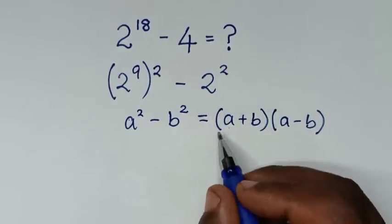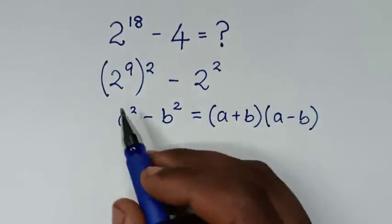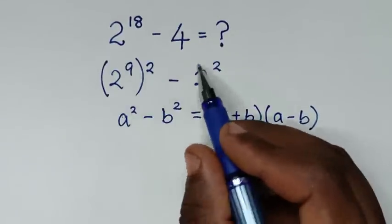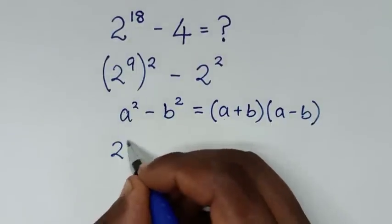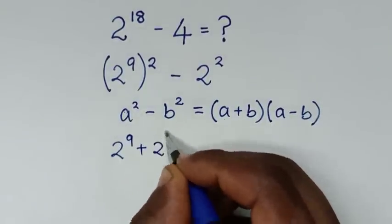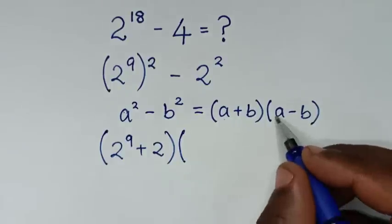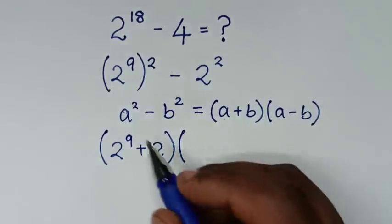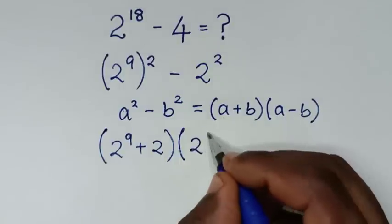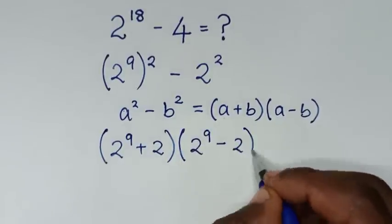So we'll apply this form. Then a plus b will be 2 power of 9 plus 2, so here it will be (2 power of 9 plus 2), then times a minus b, which will be (2 power of 9 minus 2).